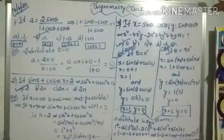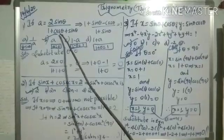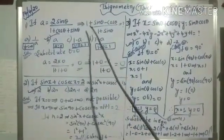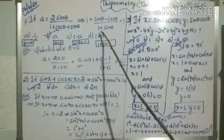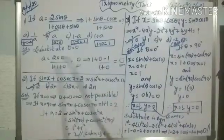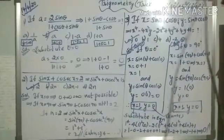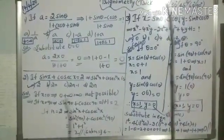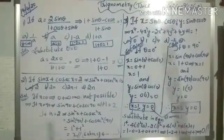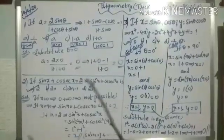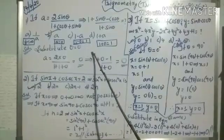Suppose if we see the first sum now. The first question is: if A equals 2 sin θ divided by (1 + cos θ + sin θ), then find (1 + sin θ − cos θ) divided by (1 + sin θ). These are our options. Now, how to find this answer? If you know this table, you can say any answer. First, in the θ value, we shall substitute 0.